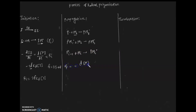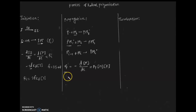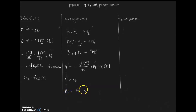The rate of propagation equals the rate of decrease of monomer concentration, which equals the propagation constant times the monomer concentration times the polymer radical concentration. Since monomer consumption equals polymer formation in the propagation step, the rate of polymerization equals the propagation constant times monomer concentration times polymer radical concentration.